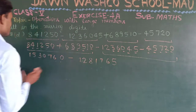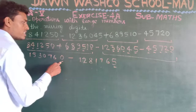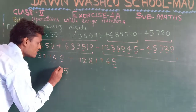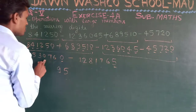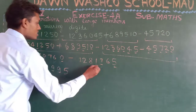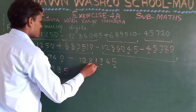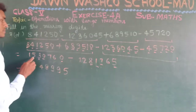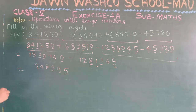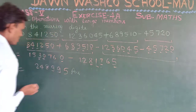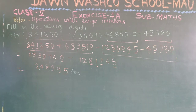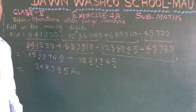Now we subtract the sum of the negative numbers from the sum of the positive numbers. Zero minus 5 — borrow to get 10, 10 minus 5 is 5. Next: 5 minus 6 — borrow to get 15, 15 minus 6 gives 9. Six becomes 16 after borrowing, 16 minus 7 gives 9. Nine minus 1 gives 8. Two minus 8 — borrow to get 12, 12 minus 8 is 4. Four minus 2 gives 2. One minus 1 gives 0 — no need to write. The final answer for question 7d is two lakh forty-eight thousand nine hundred ninety-five. I hope you understood. Bye everyone, have a nice day.